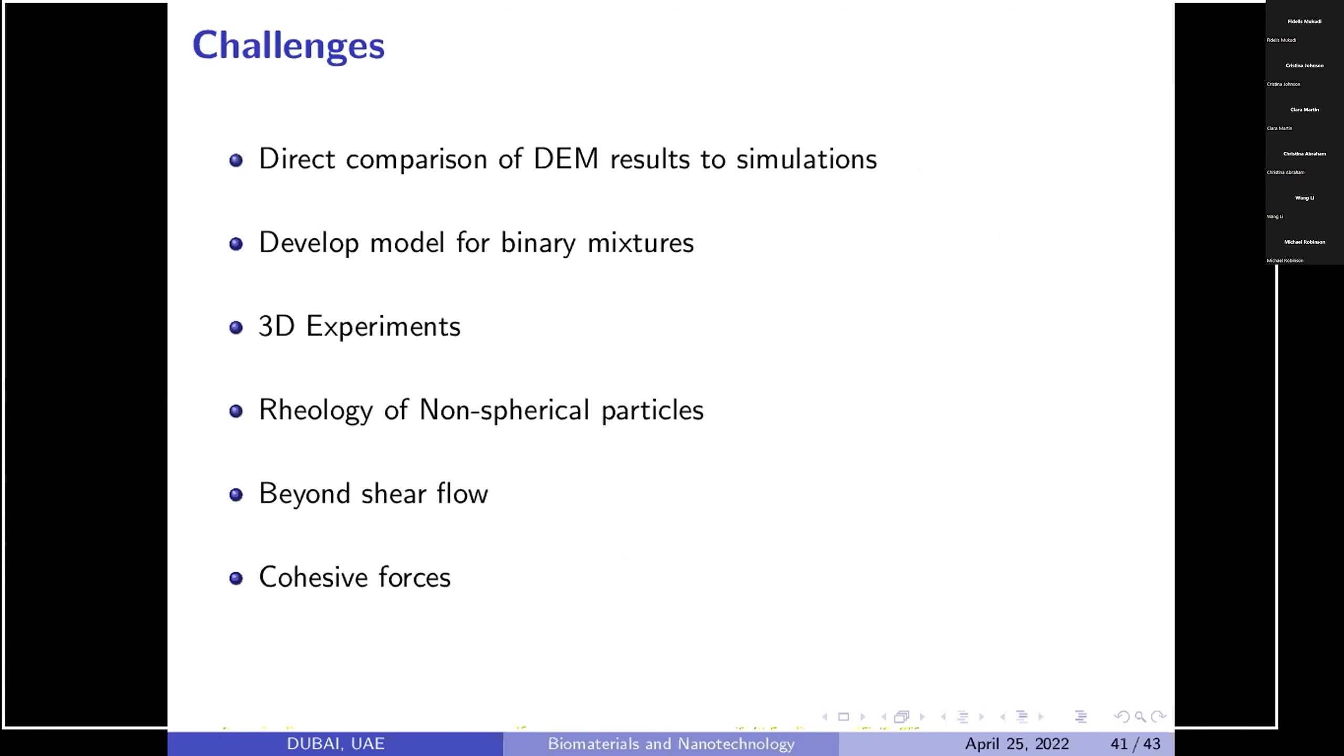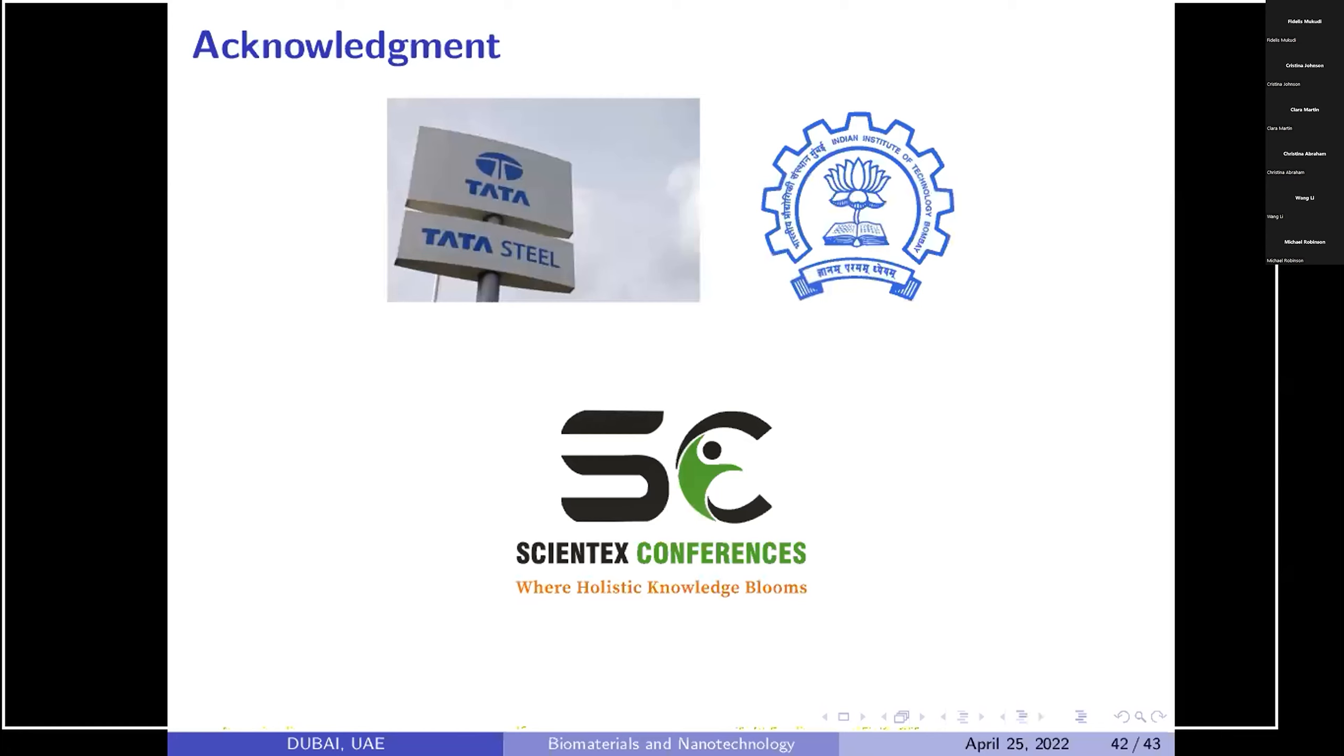What are the challenges? Direct comparison with DEM simulation is difficult. To develop model for binary and tertiary mixture is also difficult. 3D experimentation is very difficult. Nowadays people are using particle image velocimetry but for dry granular material is very difficult. What I use are model granular materials in my experiments but in blast furnace we never use spherical particles. Non-spherical particle simulations and if you add cohesive binders then cohesive forces will come in picture. Even the size is less, powder flow is very difficult.